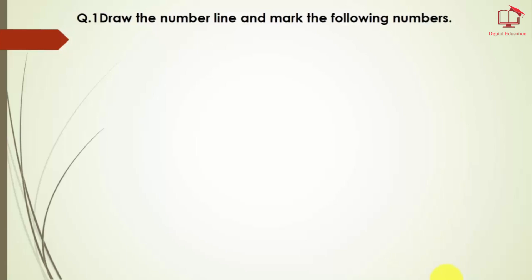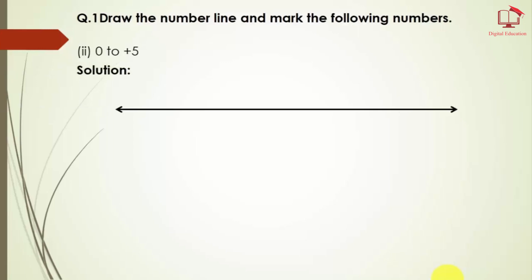Here we have the first part — numbers between 0 to 5. First we will draw a line, then mark the points with equal distances. This point we will assign 0, this point we will assign 1, and this point is 2.